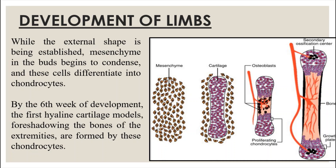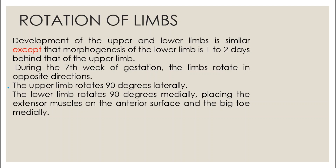While the external shape is being established, mesenchyme in the buds begins to condense and these cells differentiate into chondrocytes, which develop from the mesenchyme that comes from the lateral somatic mesoderm. By the sixth week of development, the first hyaline cartilage models foreshadowing the bones of the extremities are formed by these chondrocytes.